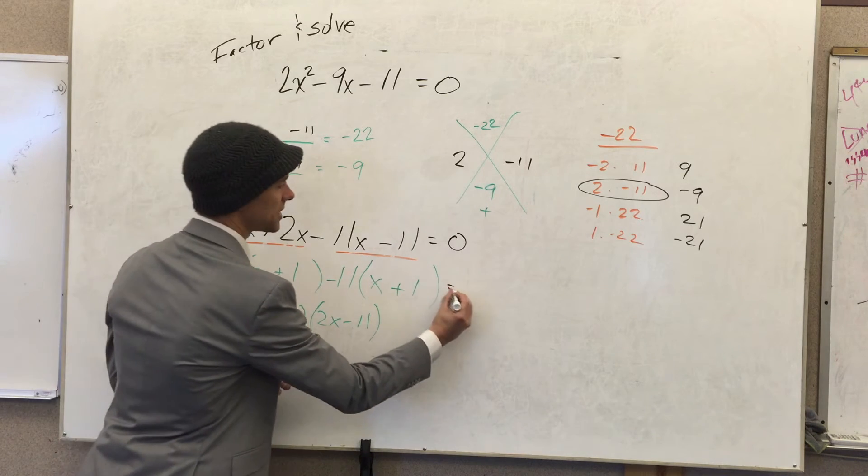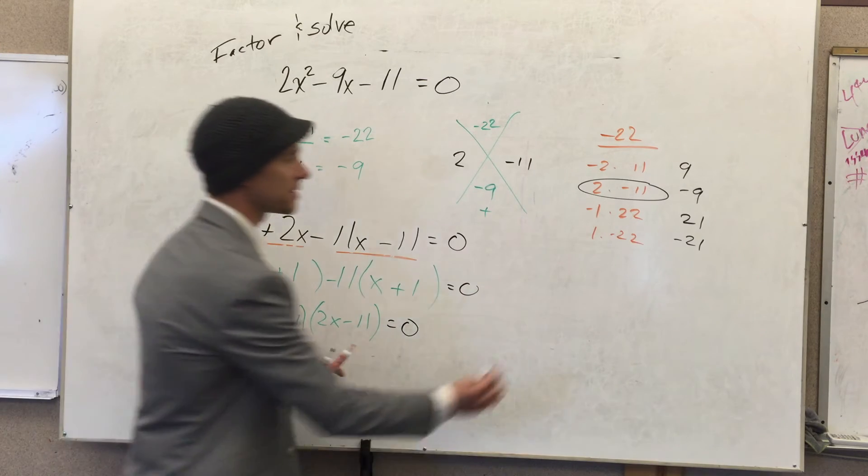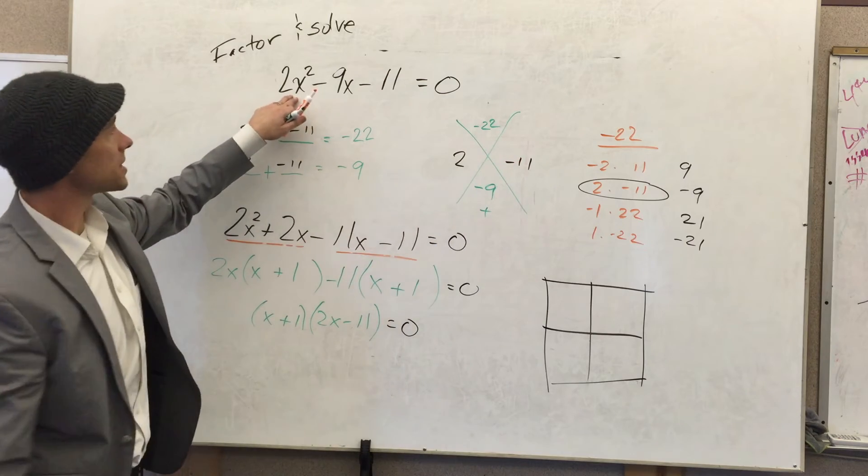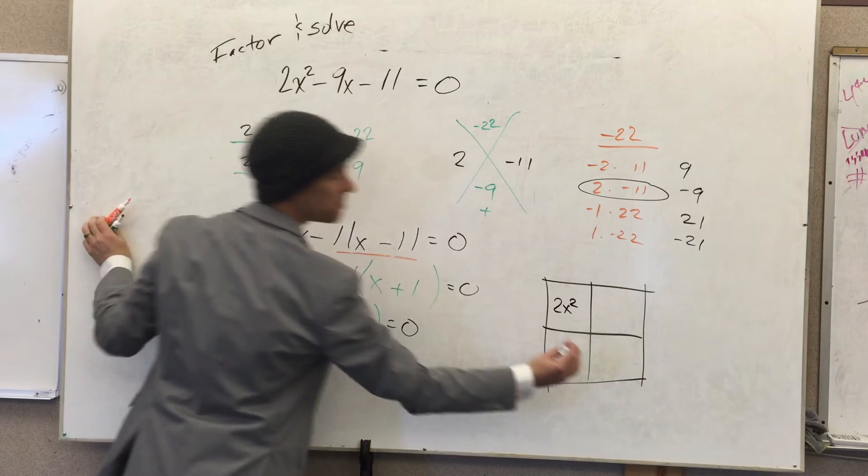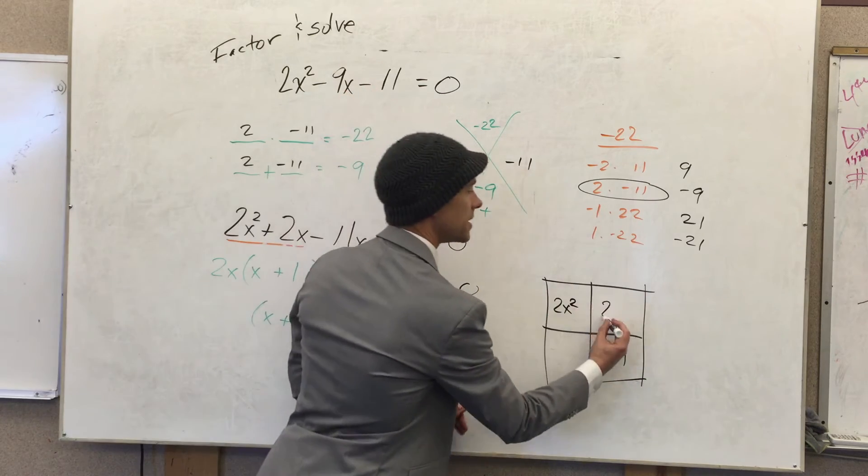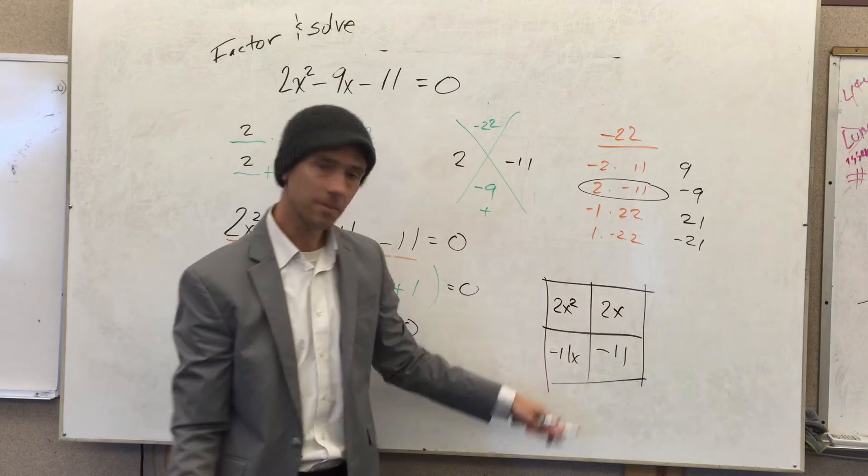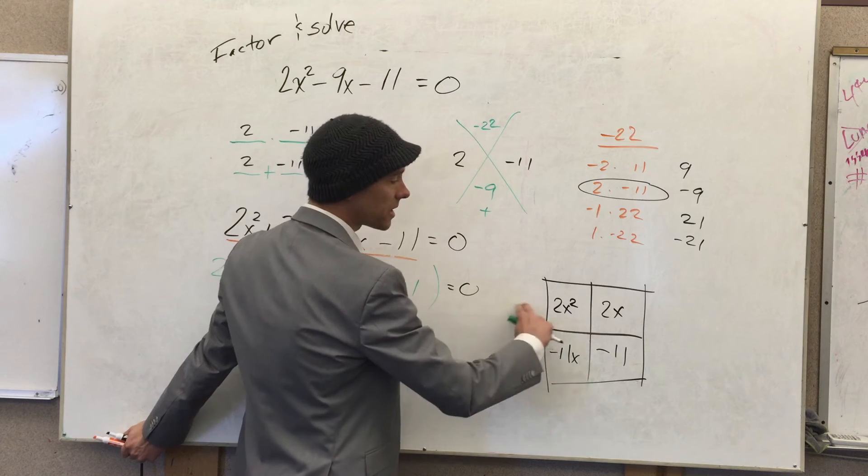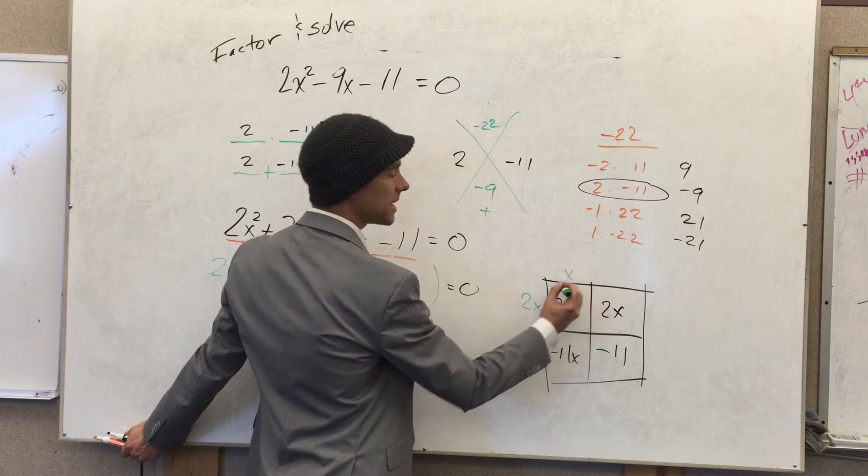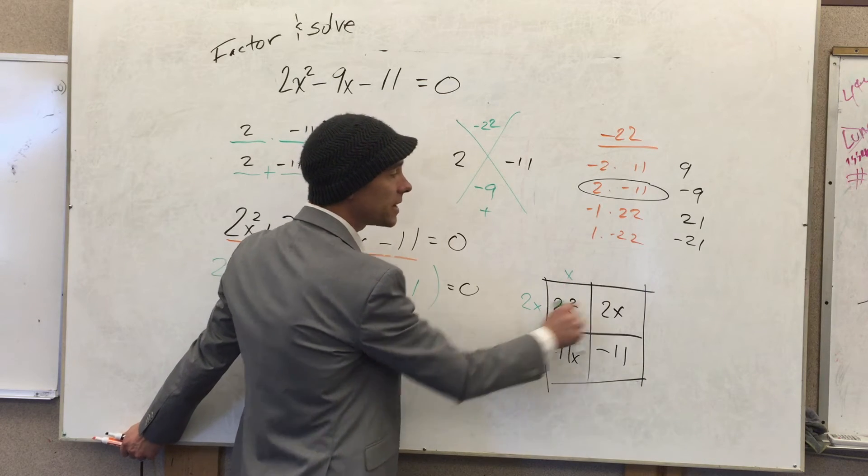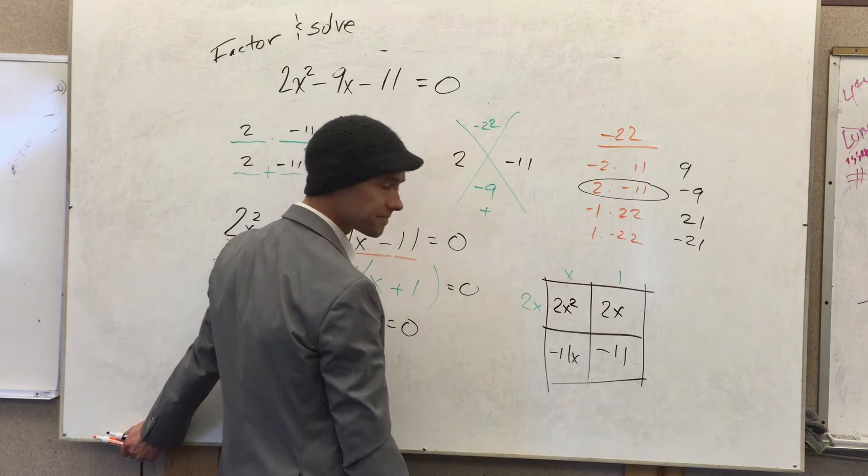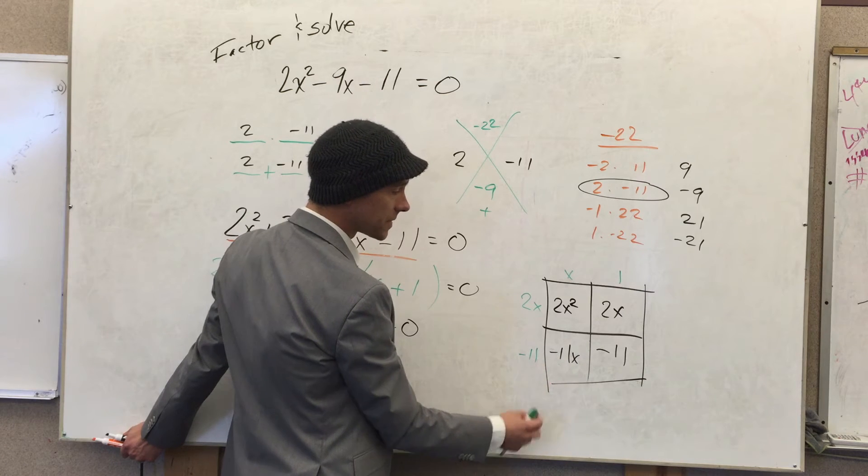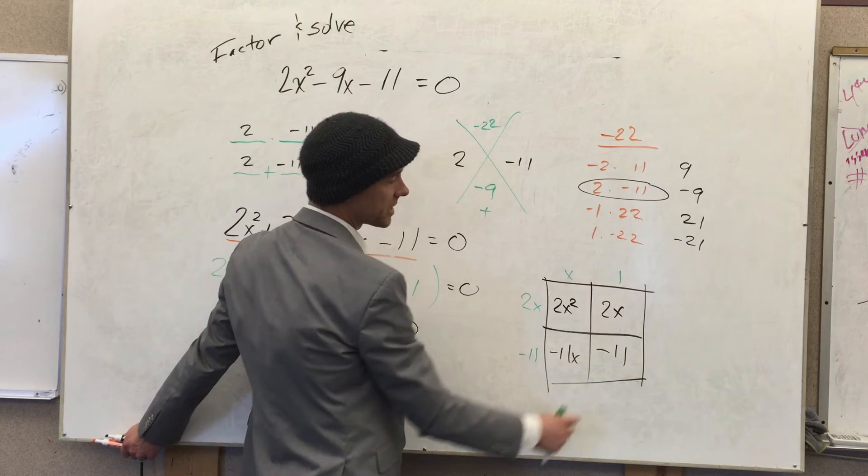I'll show you that other factoring method—it's called the box method. After you solve the puzzle, you make a box. You put the lead term in the top left, the constant in the bottom right, and you split the middle term. You need two numbers to multiply to give you 2x squared, so if I go 2x times x I get 2x squared. 2x times something gives me 2x—that something has to be a 1. Something times x gives me negative 11x—that's got to be a negative 11. Then you check: negative 11 times 1 is negative 11. The answer is on the outside of the boxes.